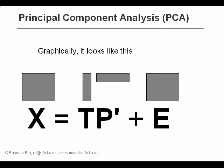Graphically, we can express it in this way. The scores and the loadings have F columns, where F would be the number of components, a number that is chosen by the user.